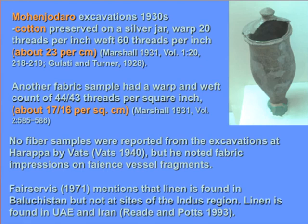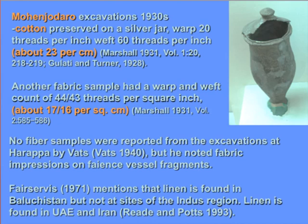Walter Fair Service did many surveys in Baluchistan and mentions that linen is found there but not in Indus sites. We do have flax — which is what linen is made from — found in the Gulf region, Iran, Shortugai in northern Afghanistan, and Baluchistan. Though flax seeds are found in the Indus, linen itself does not seem to have been widely produced, and we have no preserved linen fibers. Cotton, being much more easily produced and processed than linen, was likely the preferred textile fiber.